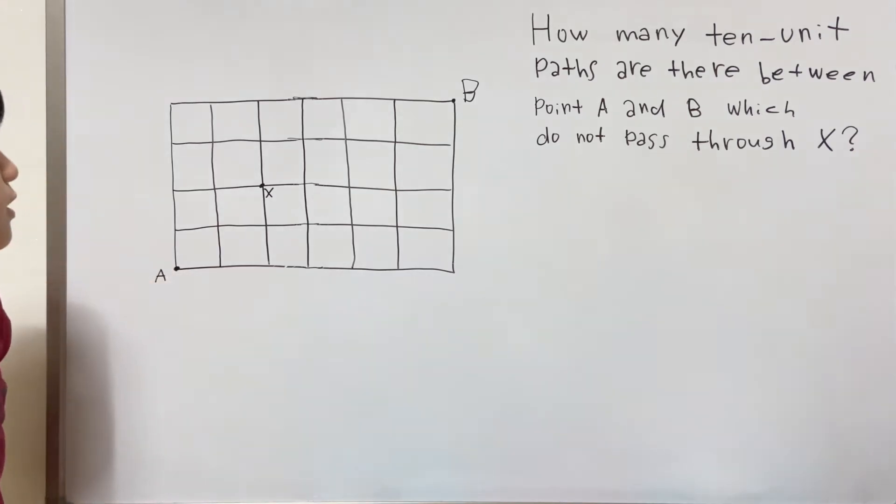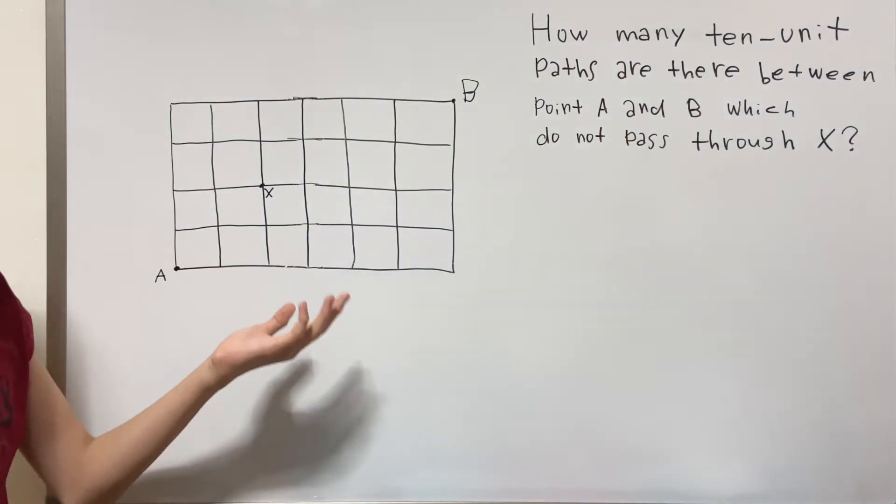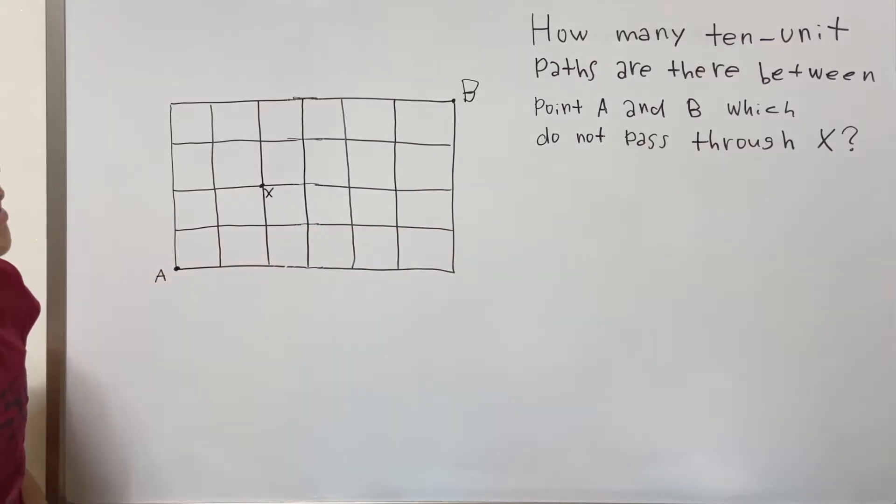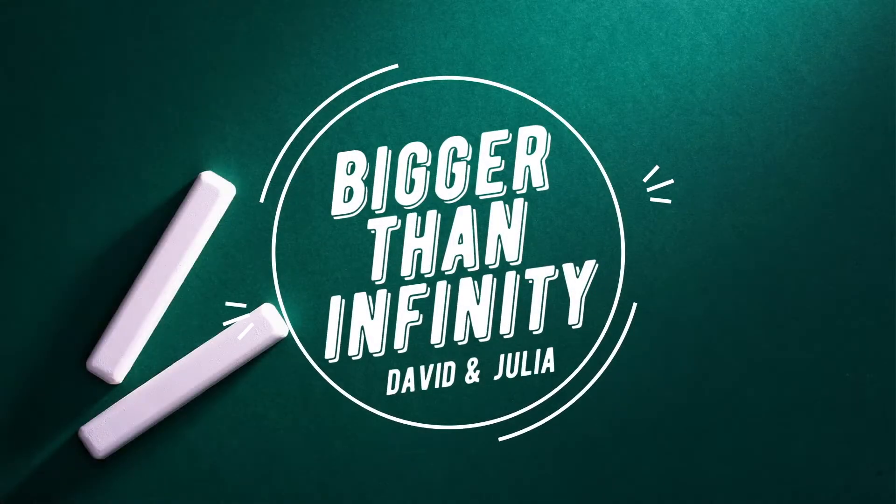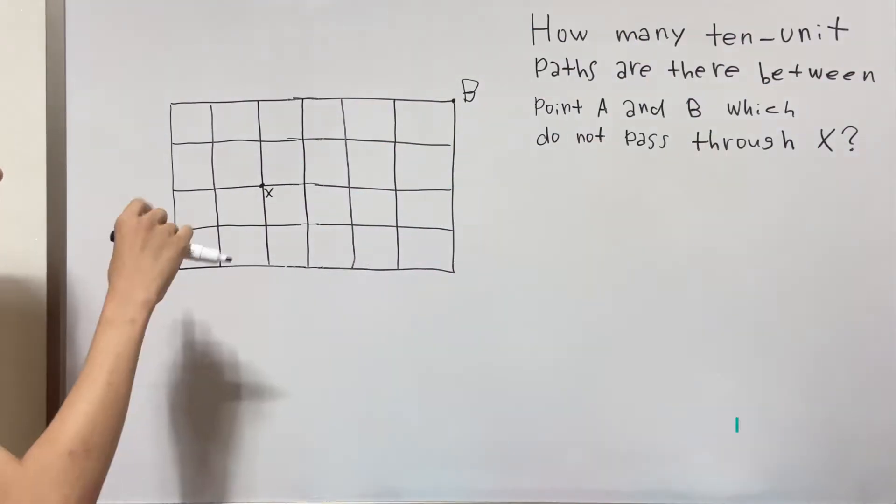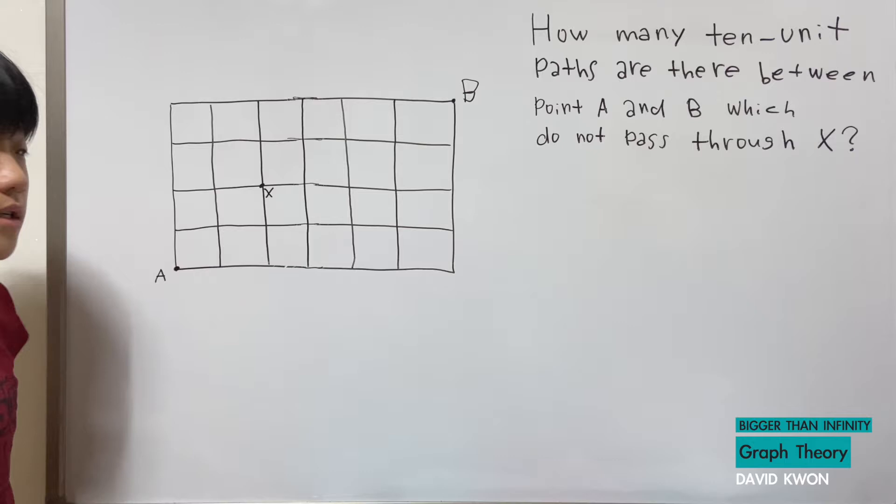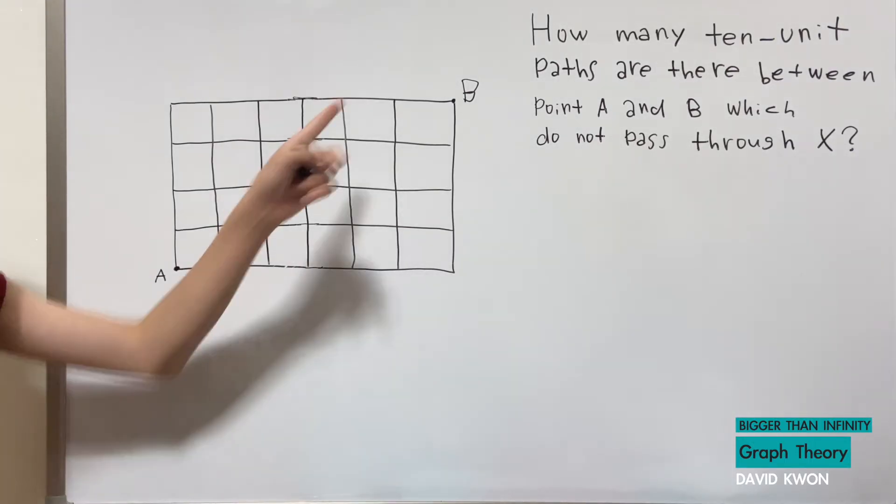Hello everyone, and today we have this problem which says how many 10-unit paths are there between point A and B which do not pass through X. Paths mean the fastest way, and here we want A to go to B but we cannot go across X.